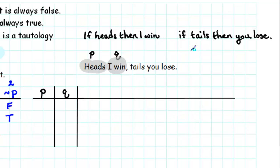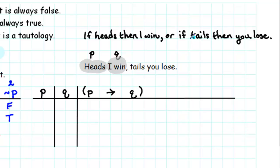It's not possible to get both heads and tails on the flip of a coin, but it is possible to get heads or tails, so we write this as a disjunction: 'if heads then I win, or if tails then you lose.' In symbolic form, 'if heads then I win' is P → Q. Since P is heads, tails must be not P. And since 'you lose' means 'I win,' you lose is equivalent to Q. So the second part is not P → Q. We join these two conditionals together with OR.